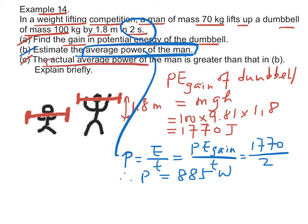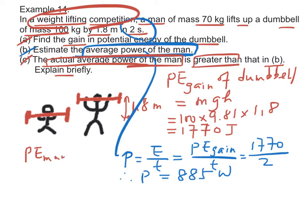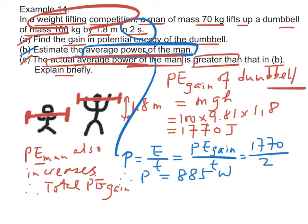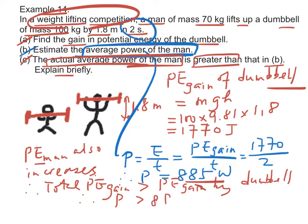Part C: the actual average power of the man is in fact greater than that found in Part B. Explain briefly. During the lifting competition, the potential energy of the man also increases. Therefore, the total PE gained by the dumbbell and the man is larger than the PE gained by the dumbbell only. Therefore, the power should be larger than 885 watts.